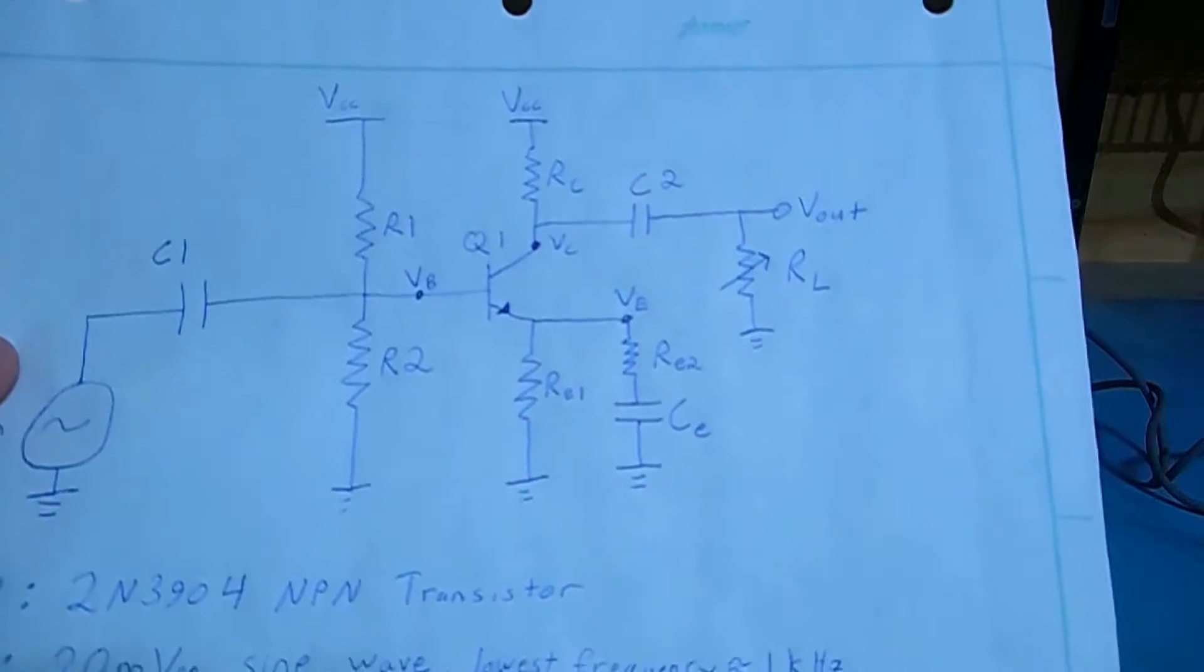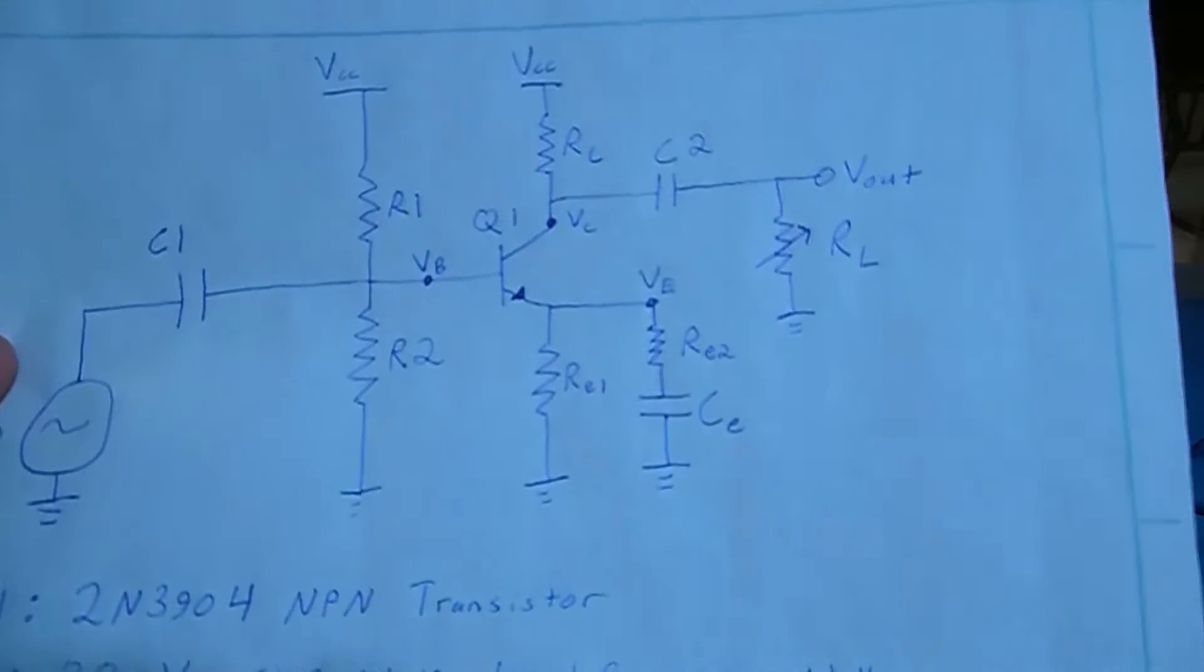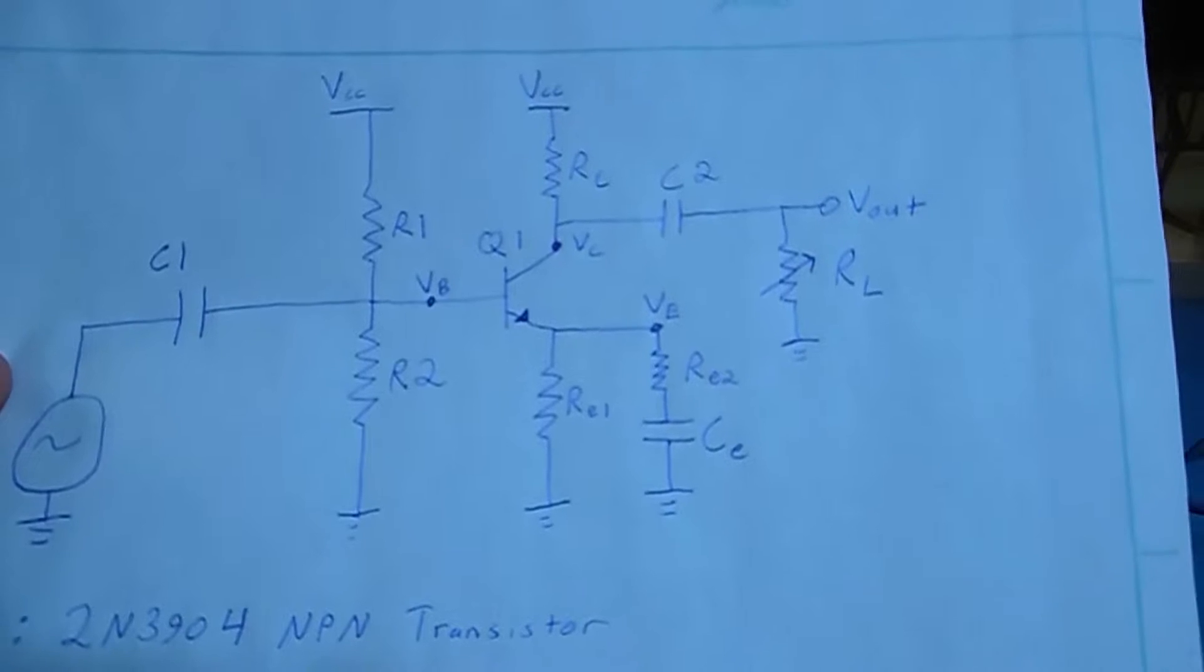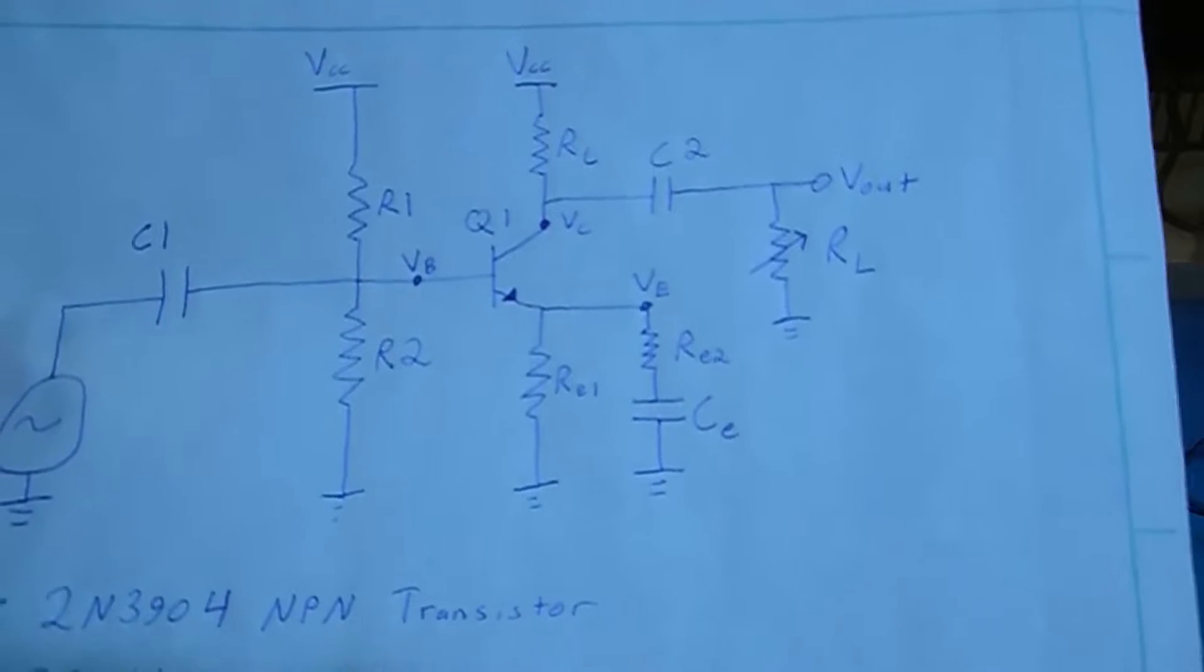So we're going to modify that circuit with a few components around the emitter of the transistor. Here they're shown as RE1, RE2, and CE.